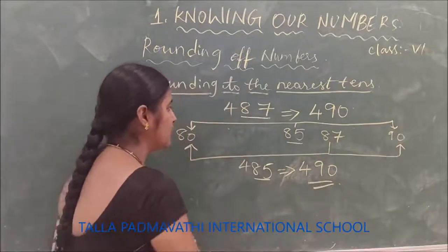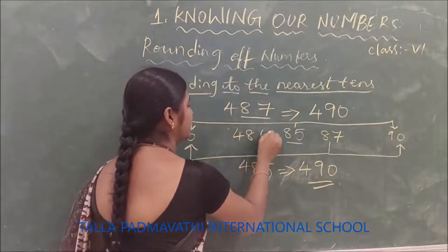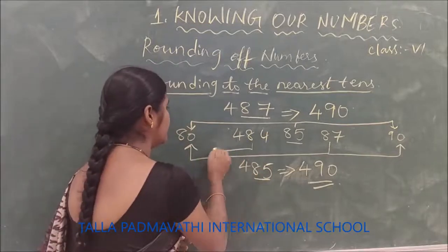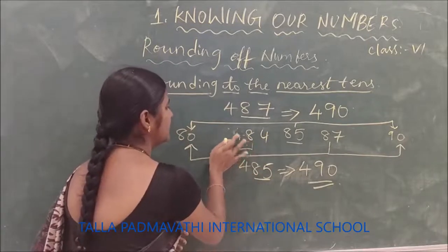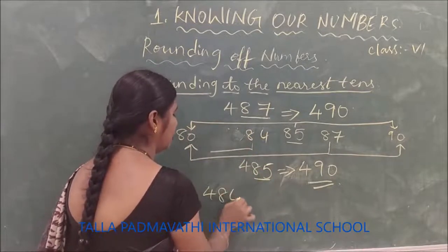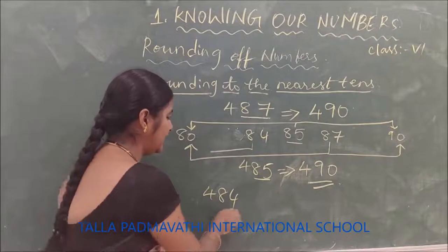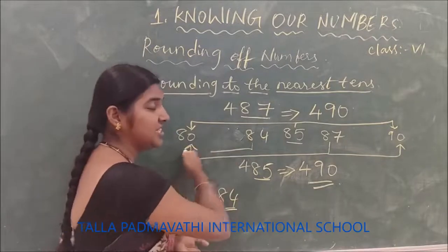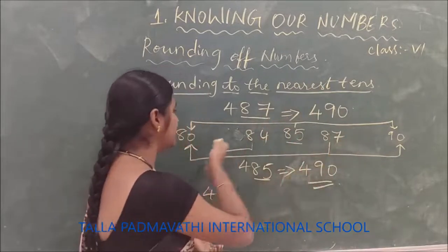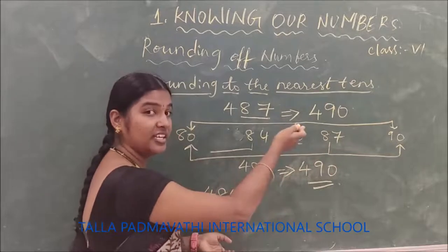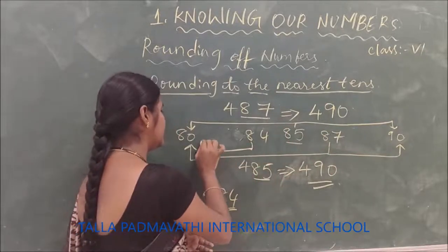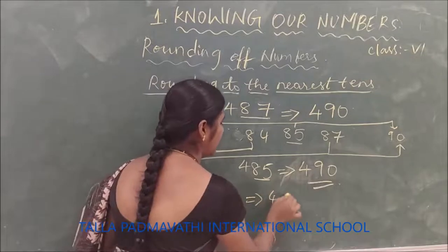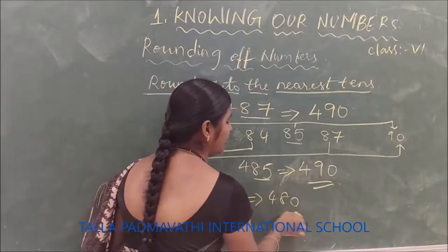Suppose if you have 484, let us think about 484. Now 84 is nearest to 80. 84 is between 80 and 90. Is it nearest to 80 or 90? Yes, it is nearest to 80. So we can round off 484 to 480.